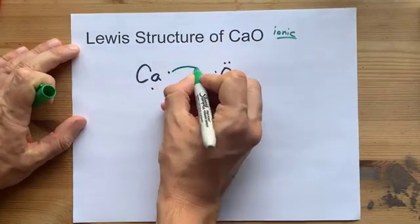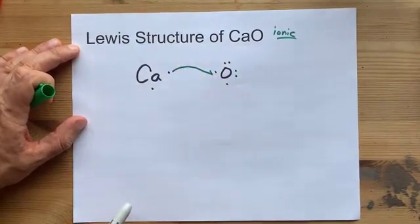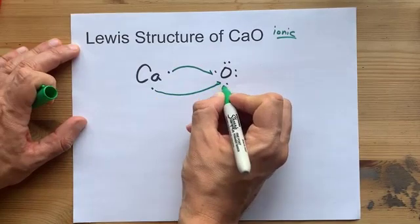So the calcium gives one of its electrons away to here, pairs up with that unpaired electron, gives its other electron away to the same atom.